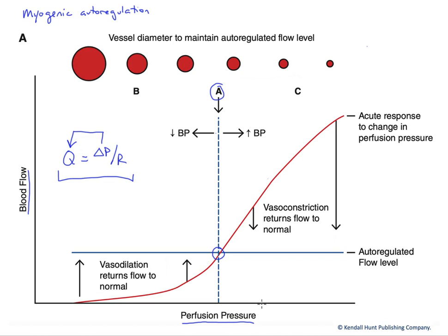Blood pressure can go up or down, and we don't want that to affect our blood flow. We want to make sure that we're regulating blood flow to match metabolic need, not in response to changes in blood pressure.